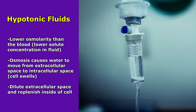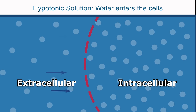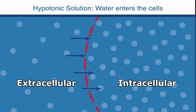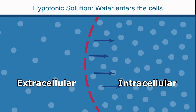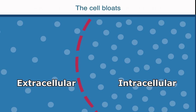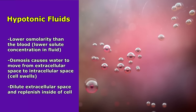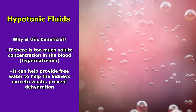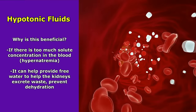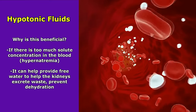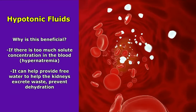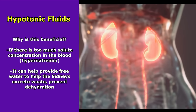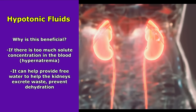Hypotonic IV solutions have a lower osmolarity than the blood — a lower concentration of solutes. Because of this, osmosis will cause water to move from the extracellular space into the intracellular space, which can swell the cell to the point where it may rupture. These fluids help dilute the extracellular space and replenish the inside of the cell. This is beneficial when there's too much solute concentration in the blood — for example, hypernatremia — as these solutions dilute it. They also provide free water to help the kidneys excrete waste and prevent dehydration.